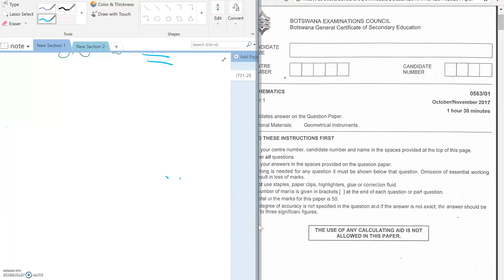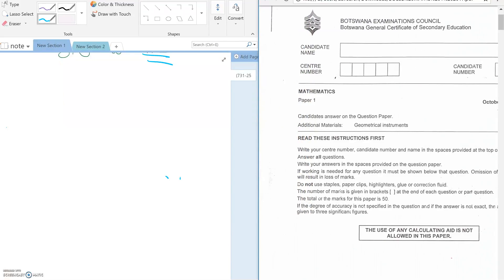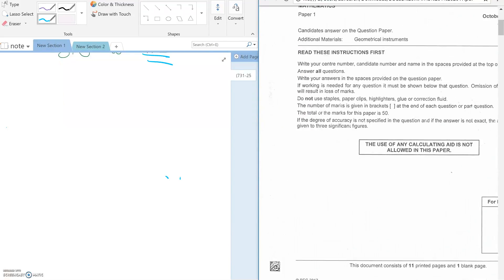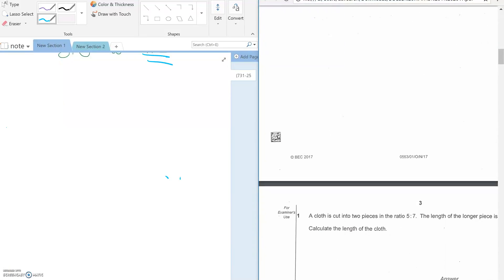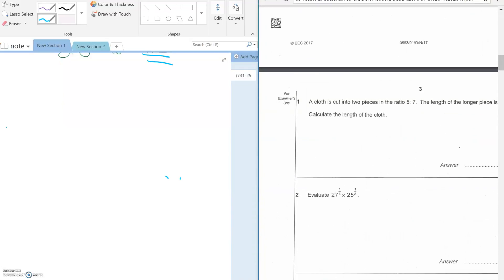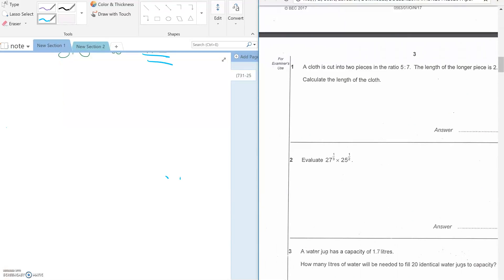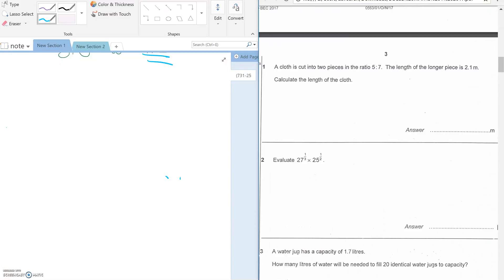Hello, welcome to the 2017 Met Paper 1, let's go to the first question. It says that a cloth is cut into two pieces in the ratio 5 is to 7. The length of the longest piece is 2.1 meters, and find the length of the cloth.